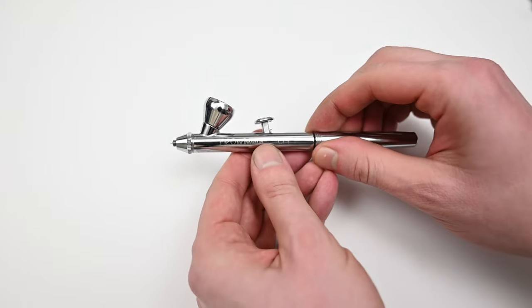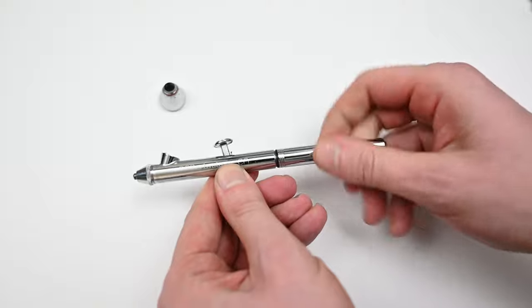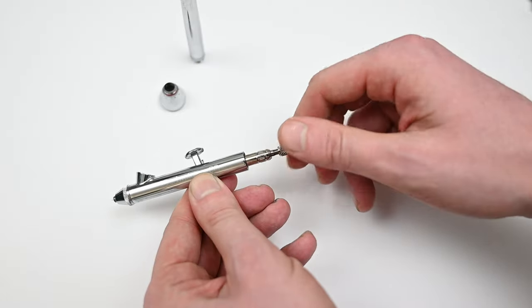So let's move along to a quick breakdown so you can see all the internal parts of the Neo. After removing the cup, the rear handle, and the needle we have access to the spring assembly.